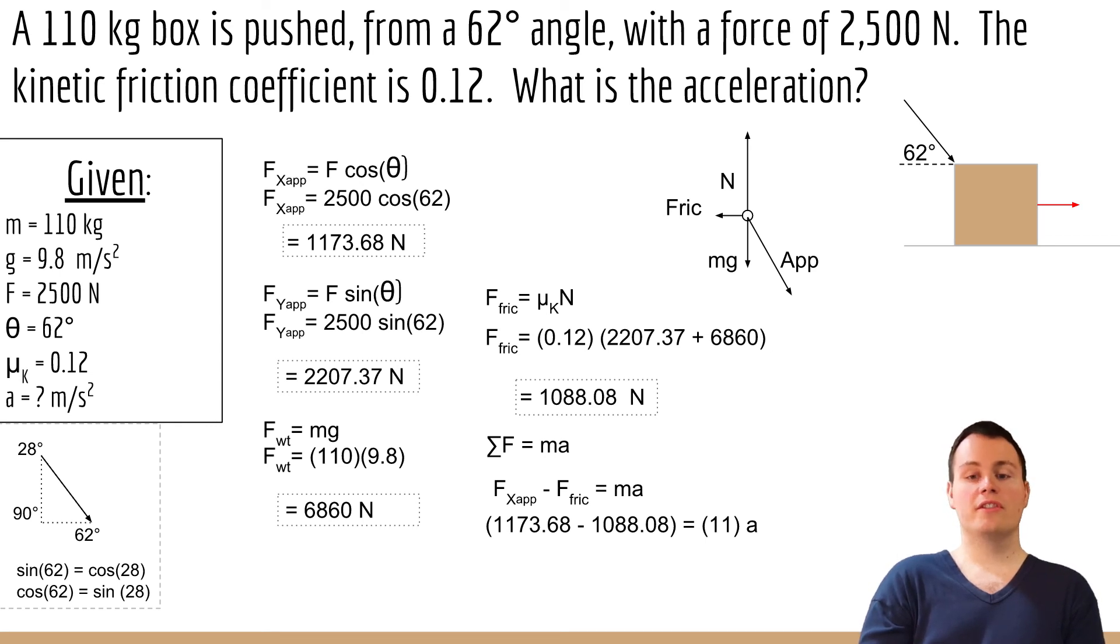So we'll subtract that and we're going to set that equal to the total mass times the acceleration. And now we just need to solve for acceleration. And when we plug all that in we find that the total acceleration of the block is 7.78 meters per second squared.